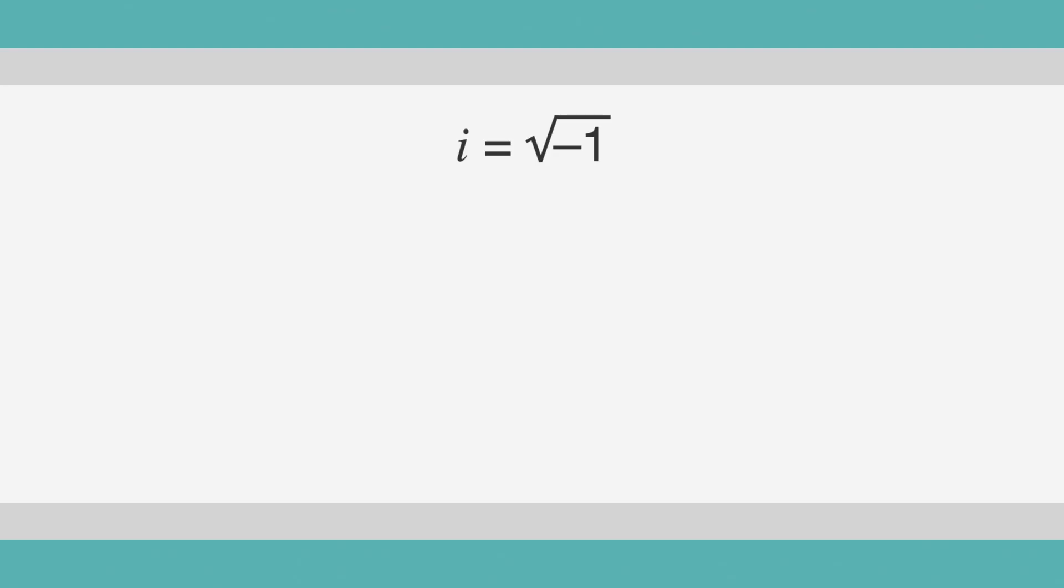First, a quick refresher. i is the square root of negative 1. When i questions come up, the SAT will typically remind you that i equals the square root of negative 1. This can come in handy on questions that ask you to multiply or divide complex numbers.